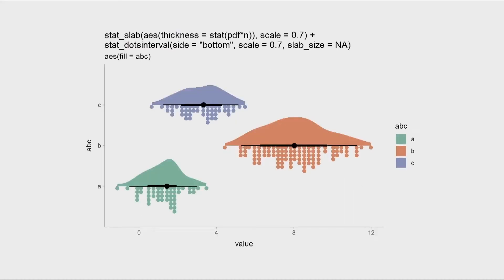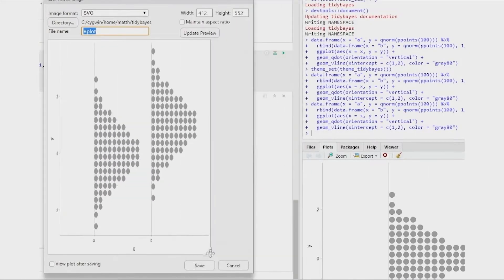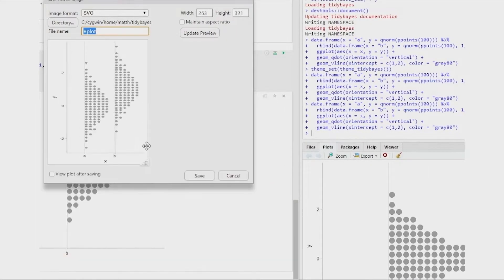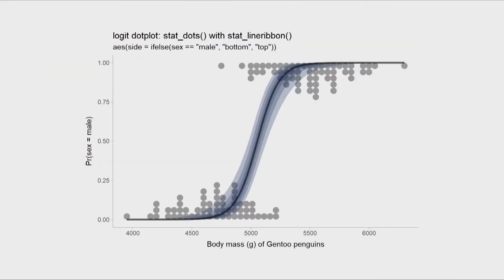Everyone loves rain cloud plots these days. ggdist makes them incredibly easy to create. So we're just combining a slab geometry with a dots interval geometry. This works because the dots interval geometry in ggdist automatically figures out how big the dots need to be in order to fit. This makes it really easy to combine the dots geometry with other more complex plot layouts.